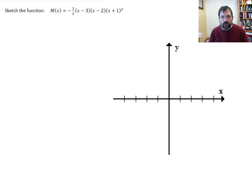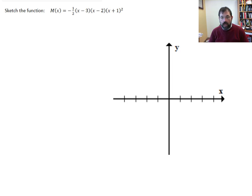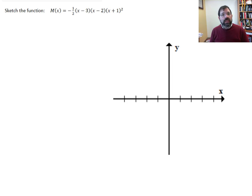Here we are asked to sketch the function m of x, which is negative one-half times x minus 3, times x minus 2, times x plus 1 squared. The first thing we want to do is say this is a polynomial function, and let's do a little bit of analysis on this function.